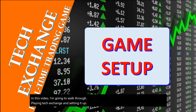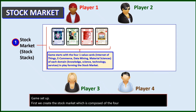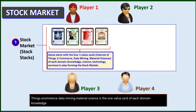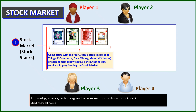Game setup. First, we create the stock market, which is composed of the four one-value cards: The Internet of Things, eCommerce, data mining, material sciences — the one-value card of each domain: knowledge, science, technology, and services. Each forms its own stock stack, and they all come into play at the start of the game.